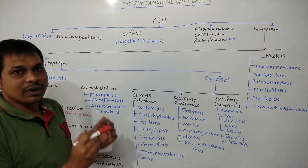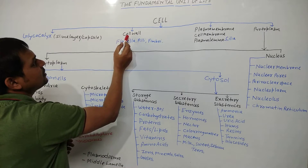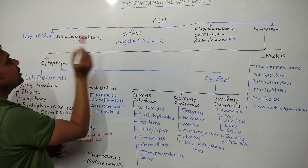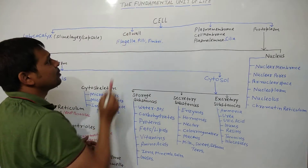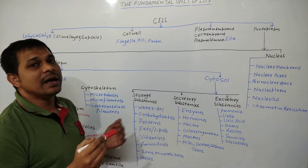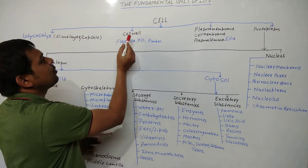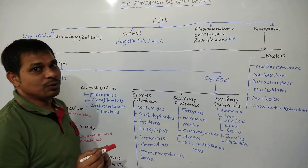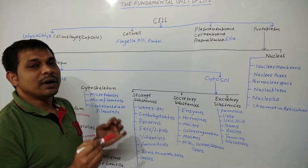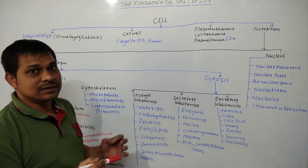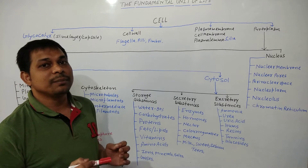Glycocalyx is made up of polysaccharide and protein — polysaccharide being a complex type of carbohydrate. The second component is the cell wall. Below the glycocalyx, the cell wall is present, and its chemical composition varies in different groups of organisms.